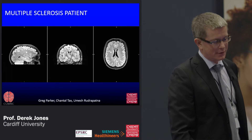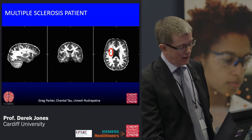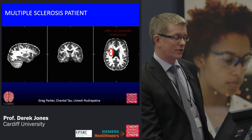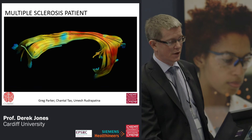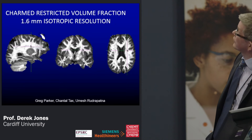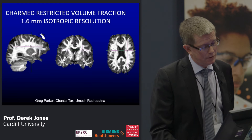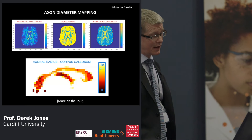We've been looking at fairly obvious things like the restricted volume fraction in multiple sclerosis — you can see the lesion here. This is work with Greg Parker, Chantal Tax, and Umesh Rudrapatna. Using Greg's automatic tract extraction tool, we can pull out the pathways that pass through here and obtain a quantitative estimate of the axonal properties within that pathway. This is data at 1.6 mm isotropic resolution — signal-to-noise is pretty nice. Chantal has been working on reproducibility and you'll be able to see that on the tour.